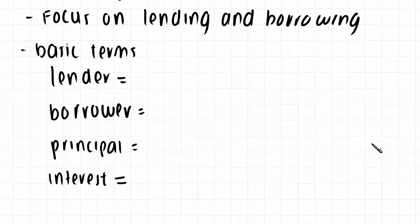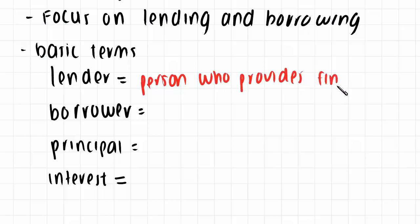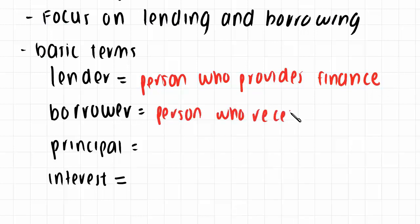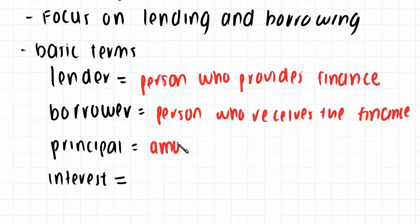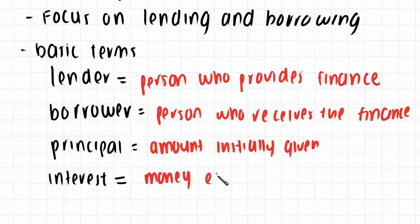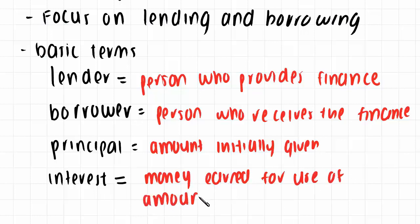The basic terms are: the lender, which is the person who provides the finance — that might be in the form of money or investments. The borrower is the person who receives the finance. The principal is the amount initially given from the lender to the borrower. Interest is the money earned for use of the amount provided — the lender receives a monetary earning from the borrower for lending them funds.